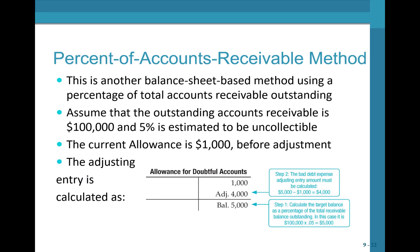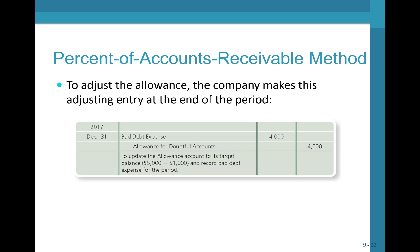Another balance sheet approach is the percentage of accounts receivable method. Here we take a percentage of the total AR. Assume we're owed $100,000 and 5% is estimated to be uncollectible, giving a target allowance of $5,000. If the allowance already has a credit balance of $1,000, we need to increase it by $4,000. So we debit bad debt expense and credit the allowance for doubtful accounts by $4,000.